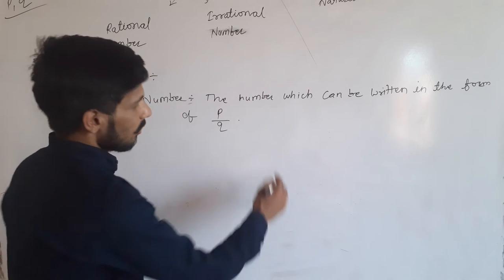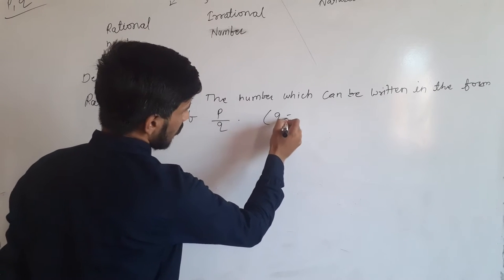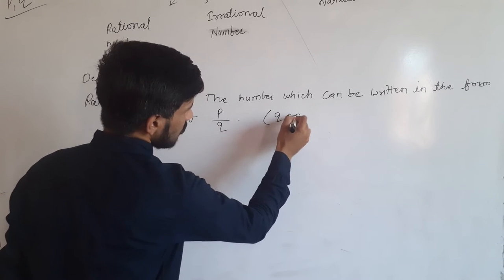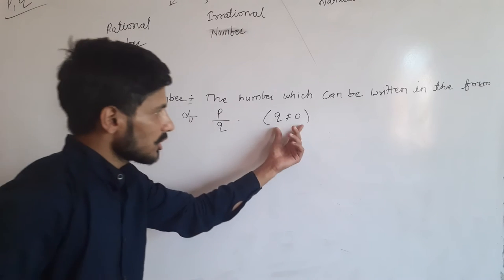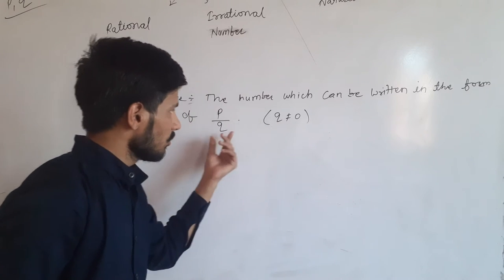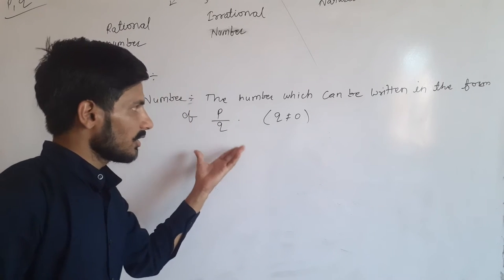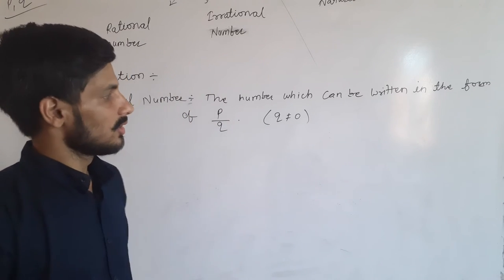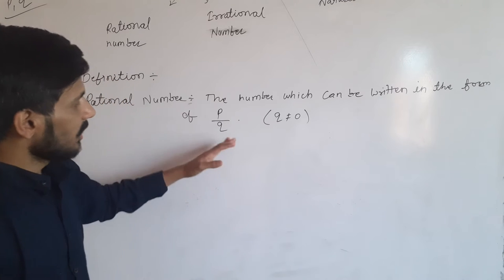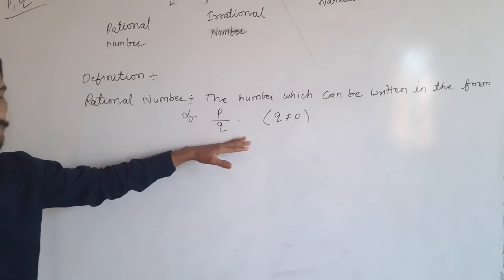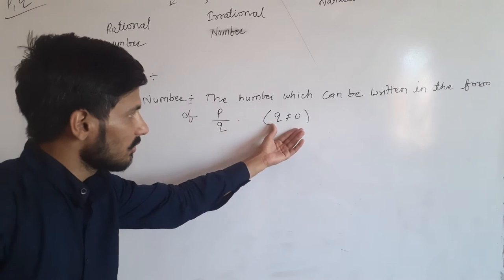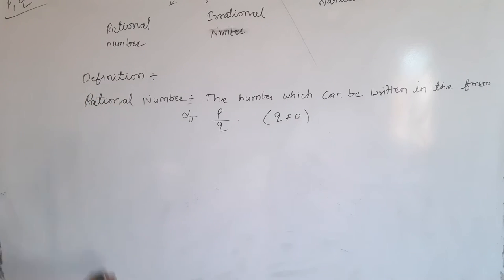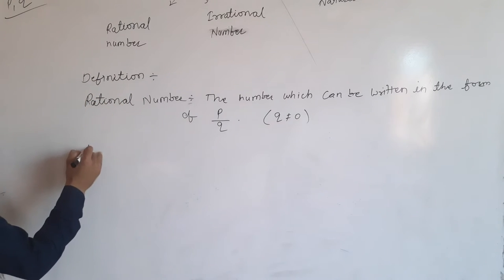Also, Q is not equal to 0. Because if Q is equal to 0, then this number will become infinite, so we can't define it. So here Q is not equal to 0. Rational numbers are numbers that can be written in the form of P upon Q where Q is not equal to 0.